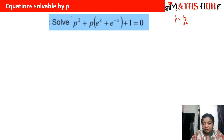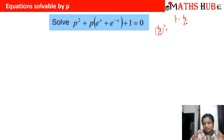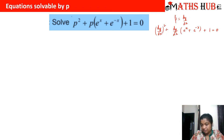Let us see this equation. We have P² + P·e^x + e^(−x) + 1 = 0, which is basically (dy/dx)² + (dy/dx)·e^x + e^(−x) + 1 = 0. Here the order is 1 but the degree is 2, so we no longer use those earlier methods. The first step is to replace P by dy/dx, which is already done here.